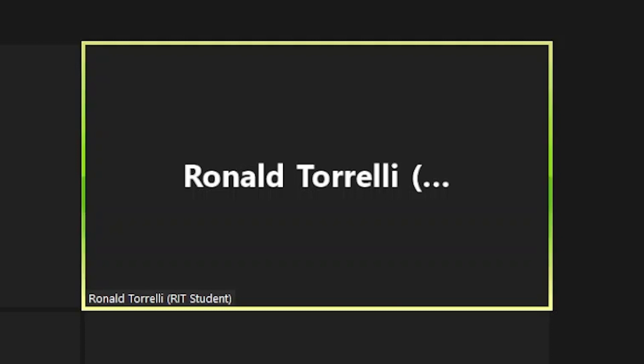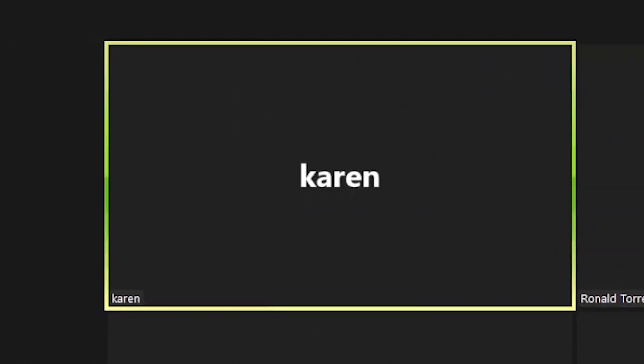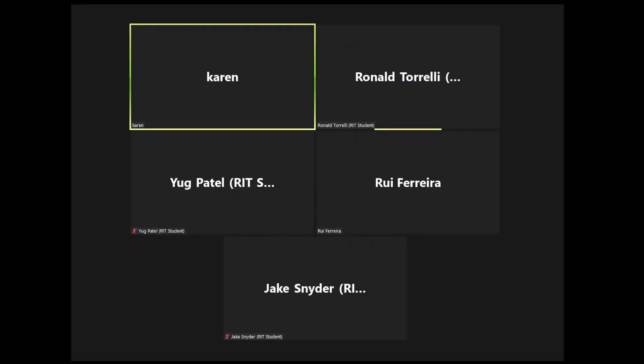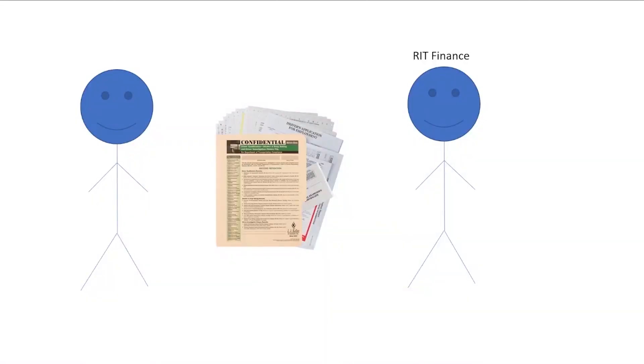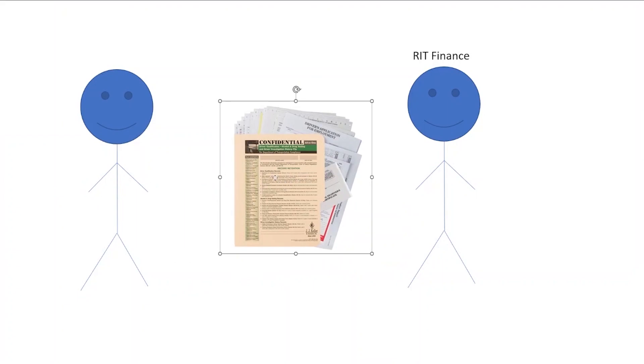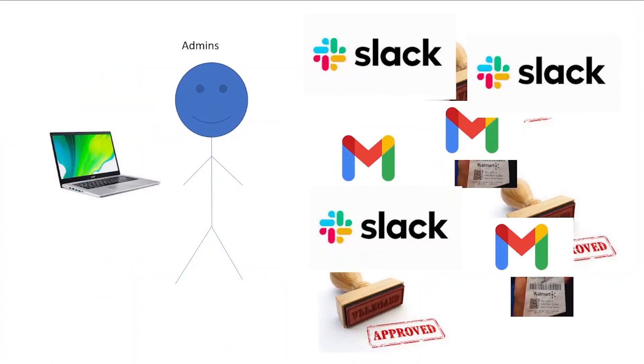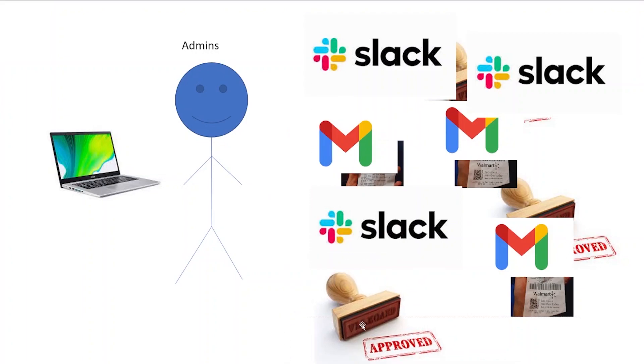You can describe in one or two words how your current process makes you feel. CIS at RIT has a problem. They have to generate packets for their credit cards and give them to RIT Finance every single month. Generating these packets is very time-consuming based on the fact that it is a mixed use of Slack and Gmail and sometimes even missing approvals on different purchases that the admins have to sift through when creating these packets by hand.